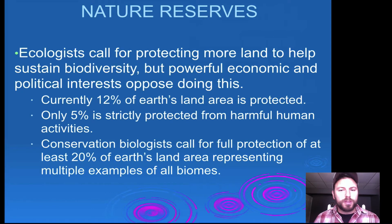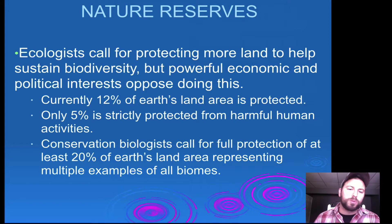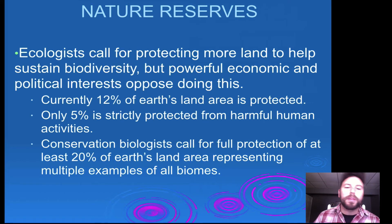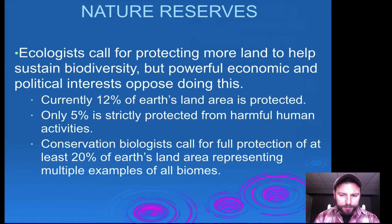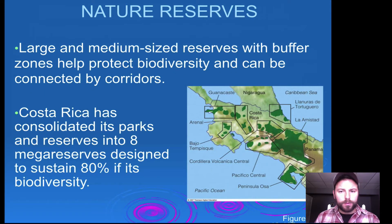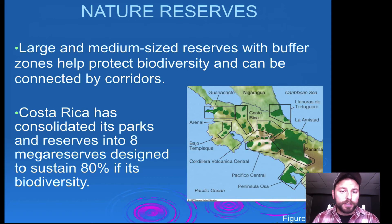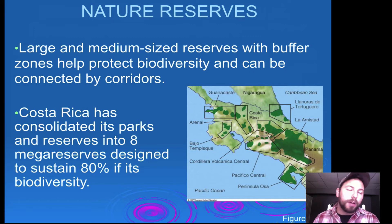Nature reserves: ecologists call for protecting more land to help sustain biodiversity, but powerful economic and political interests oppose this, especially when there are resources on that land. Currently 12 percent of Earth's land area is protected — better than marine reserves at less than one percent — but only five percent is strictly protected from harmful human activities. We'd like to get to about 20 percent. Costa Rica has an amazing network of nature reserves that draws tourists. Large and medium-sized reserves with buffer zones can be connected by environmental corridors to help protect biodiversity.